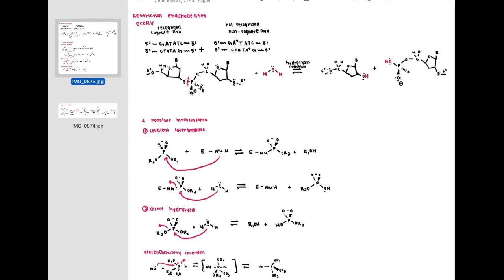Now, looking at the actual chemistry of EcoRV and the active site, the phosphodiester bond — shown with this pink squiggly line here — is what is cleaved. This will yield a free 3'-hydroxyl and the 5' end, which is attached to the phosphoryl group.